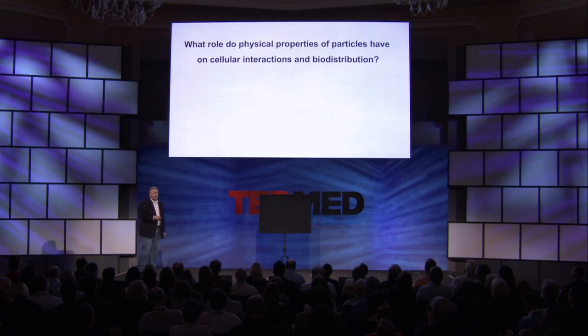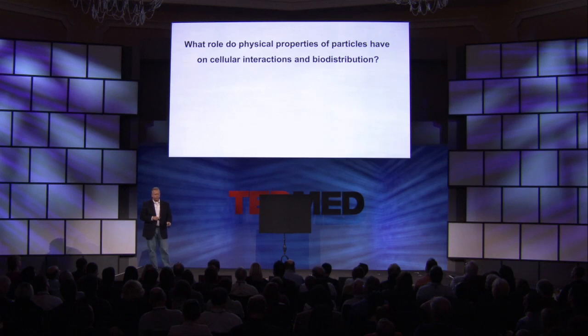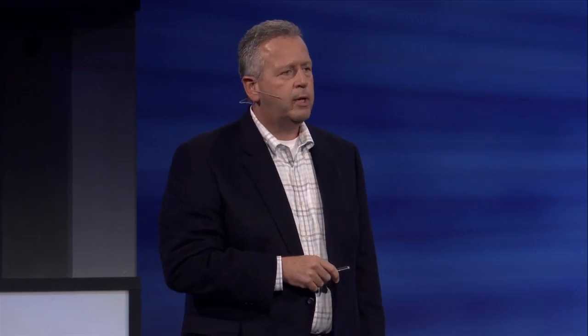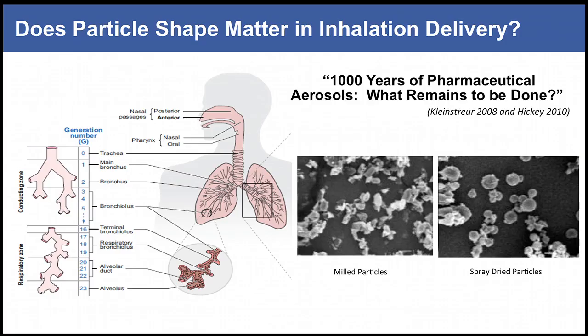We're interested in how these physical properties of particles affect cellular interactions and biodistribution — and clearly this depends on how we're administering the particles, what dosage form, whether they're inhalation, intravenous, intramuscular, and so on. Let me start with inhalation and respiratory diseases — whether you're trying to get particles into the lung for treating cystic fibrosis or asthma, or doing intranasal delivery to access the CNS directly.